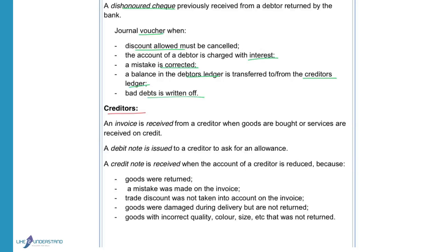Transactions with creditors: An invoice is received from a creditor when goods are bought on credit or services are received on credit. When we want to ask for an allowance, we send a debit note to the creditor. If the creditor is prepared to grant the allowance, a credit note is received from the creditor because goods were returned, a mistake was made on the invoice, trade discount was not taken into account, goods were damaged on delivery and not returned but we want a discount, or goods with incorrect quality, colour, or size were received and we will keep them but want a discount.